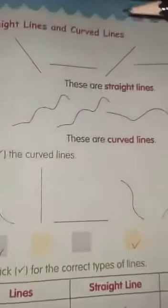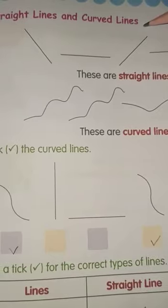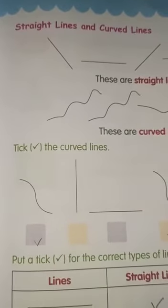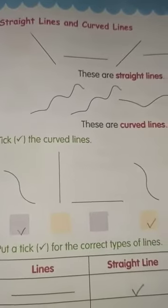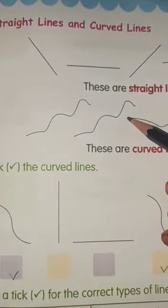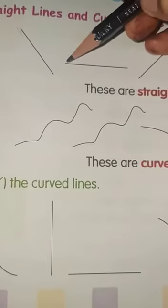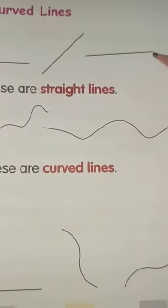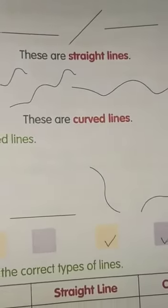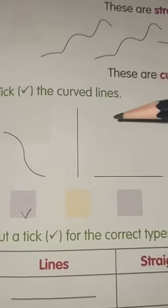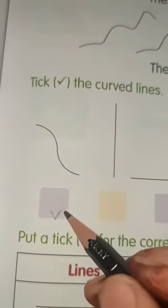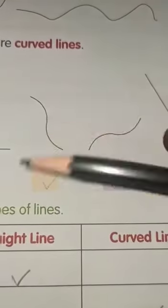The next topic is straight lines and curved lines. In your previous classes you have also learned about straight lines and curved lines — did you remember in your English subject? These are the straight lines, without any ups and downs. And these are the curved lines, with ups and downs. Here you have to observe the curved lines and straight lines, and tick the curved ones.